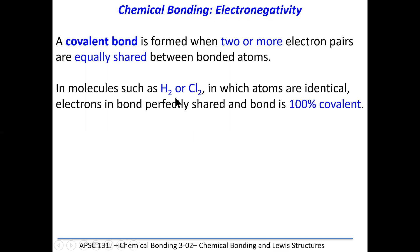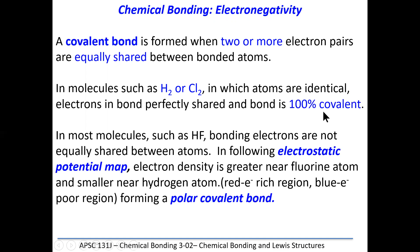When we have a molecule that has two of the same atoms, they have the same electronegativity, so they are going to share the electron pair equally. We can call that a 100% covalent bond.